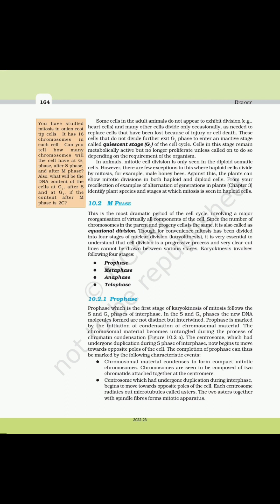In animals, mitotic cell division is only seen in the diploid somatic cells; however, there are a few exceptions where haploid cells divide by mitosis — for example, male honeybees. In contrast, plants can show mitotic divisions in both haploid and diploid cells. From your recollection of alternation of generations in plants, identify plant species and stages at which mitosis is seen in haploid cells.